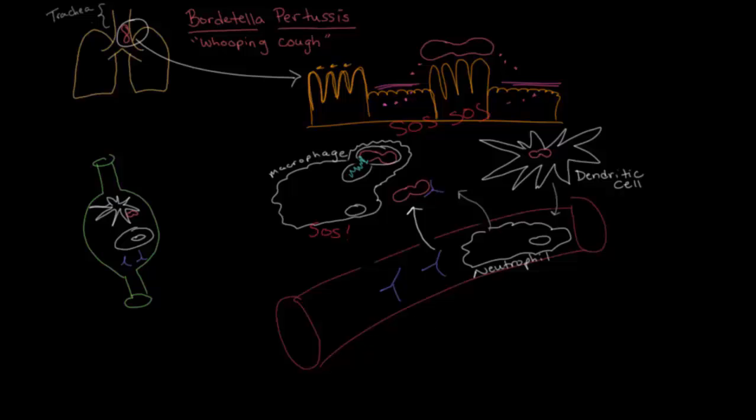Pertussis bacteria makes lots of proteins which allow it to efficiently infect the body, and then avoid being detected and killed by interrupting the normal immune response as much as possible. First, the bacteria avoids being removed from the airway by the ciliated cells by anchoring onto them. And that's what I'm showing here with this yellow protein on the surface of the bacteria anchoring into the ciliated cell.